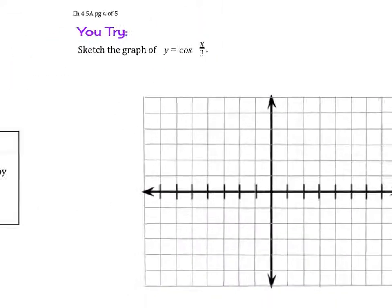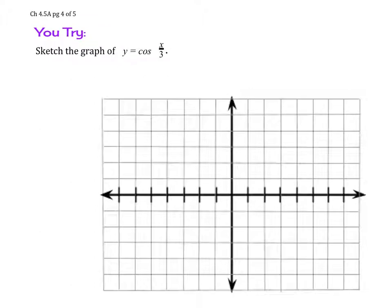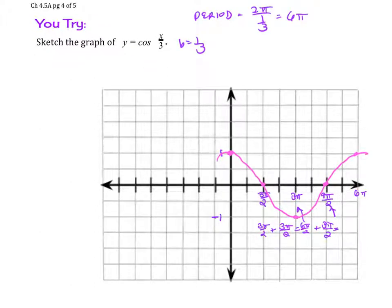So try this example here. Graph y equals cosine of x/3. So we tried this out. The period is 6π. So you start by labeling 6π here. Then half of 6π is 3π. Then half of 3π is 3π/2.